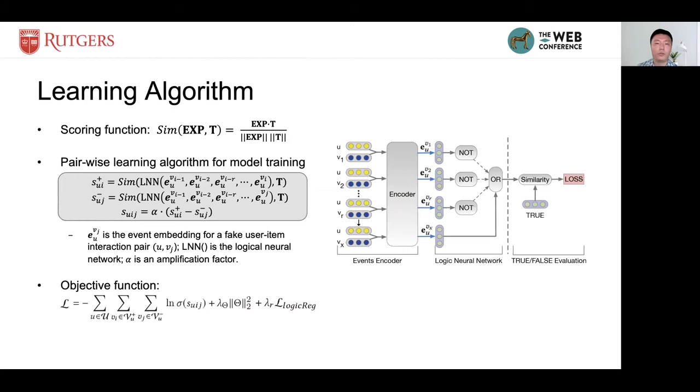We choose cosine similarity as scoring function to calculate the similarity between output vector represented as ESP here and the T vector. Take the right figure example to introduce the process of the forward network.